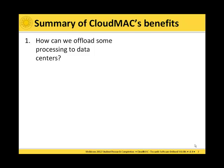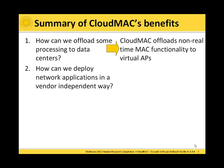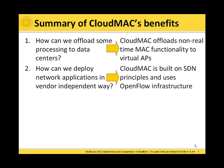To summarize, what are the benefits of CloudMac? Returning to the questions we asked initially: how can we offload processing to data centers? CloudMac allows non-real-time MAC functionality to be offloaded to virtual access points, reducing processing on the physical wireless termination points. How can we deploy network applications in a vendor-independent way? CloudMac is built on software-defined networks and OpenFlow — an open protocol — which easily allows implementing new applications. Our demo application, for example, needed only a few lines of code.